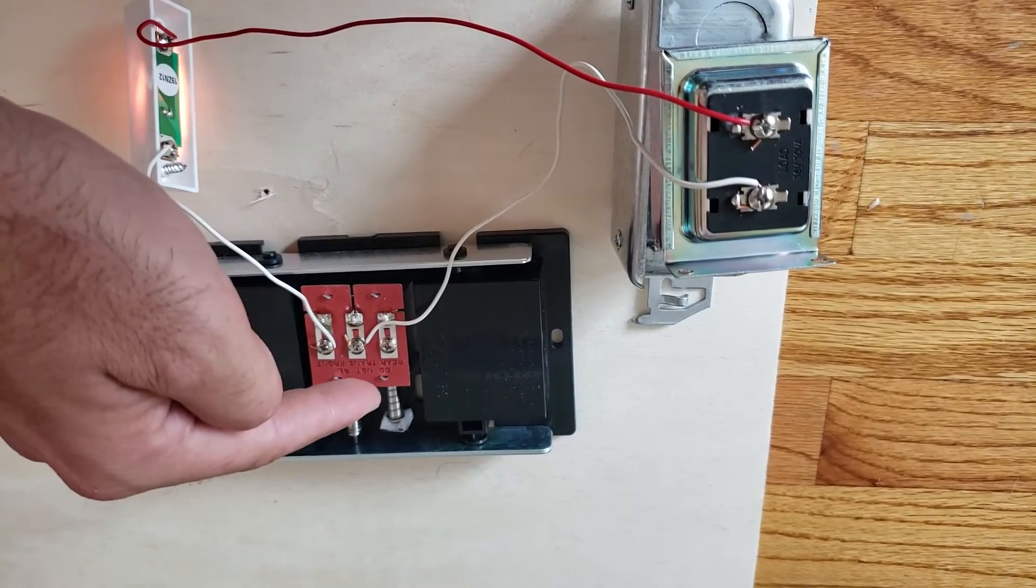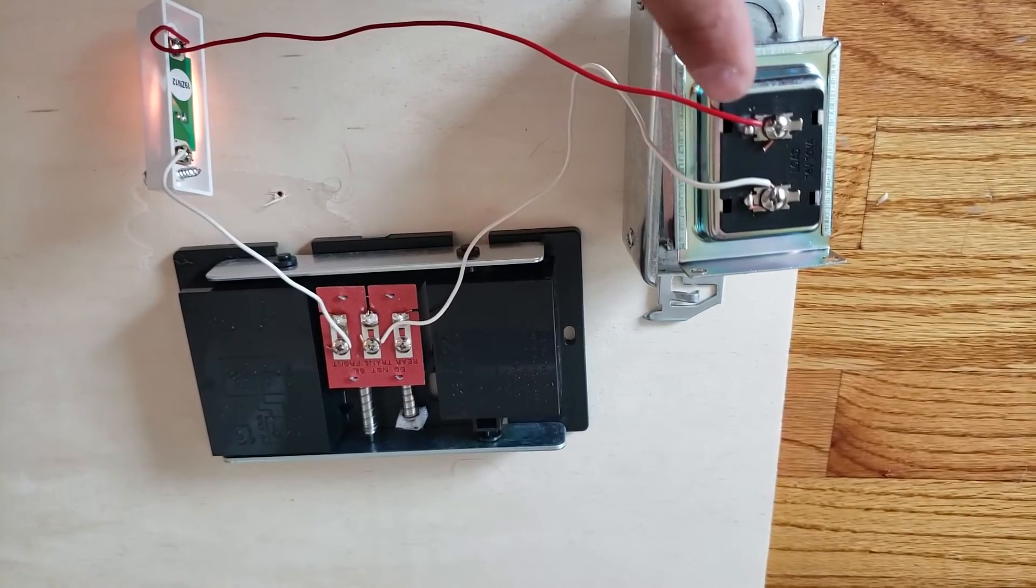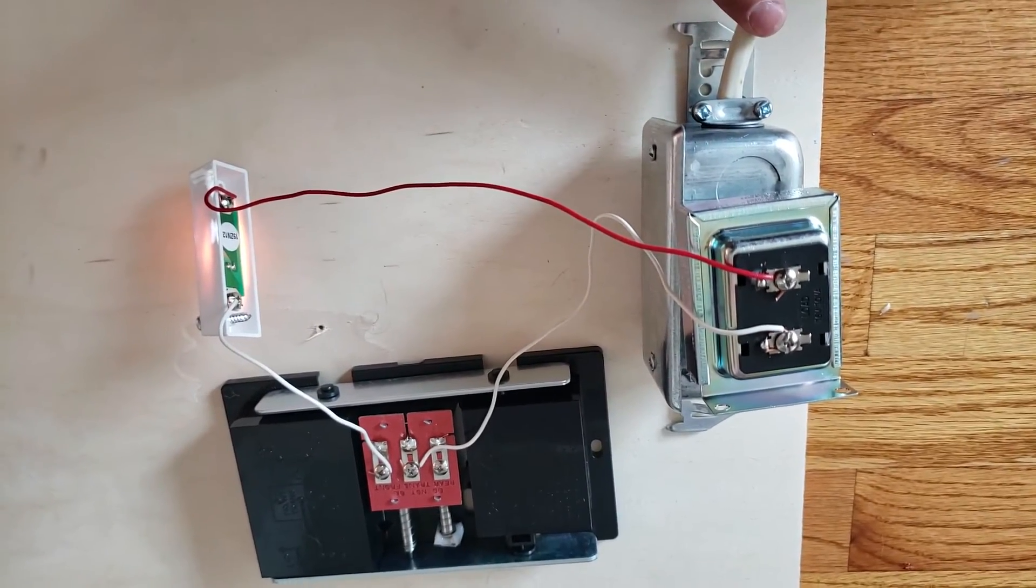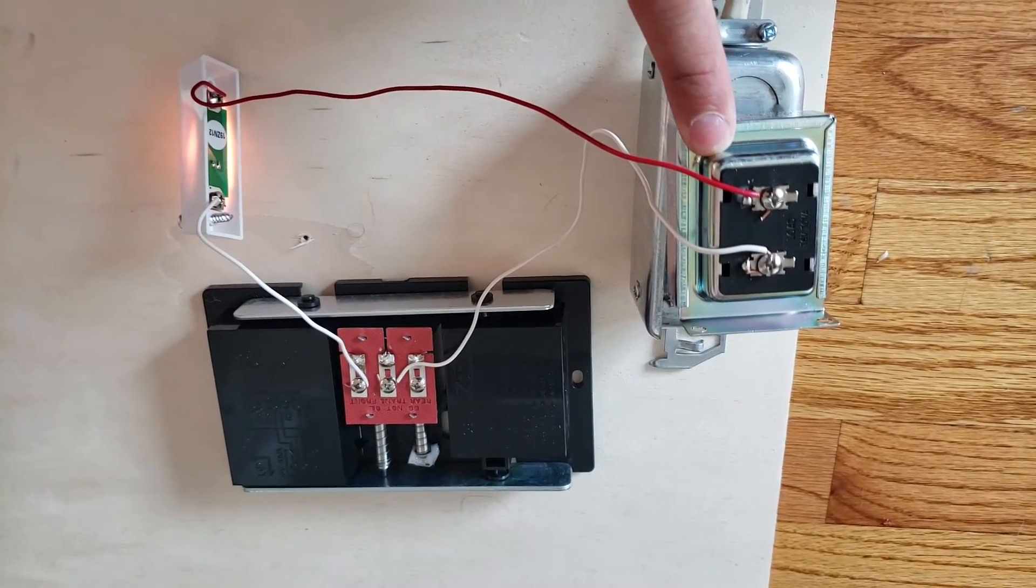The other wire goes from the transformer terminal on the chime to the transformer. Okay, and then what happens there is you've got high voltage coming in, 120 volts, that is then transformed or stepped down to a lower voltage of 16 to 24 volts.